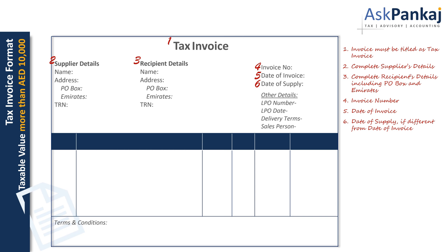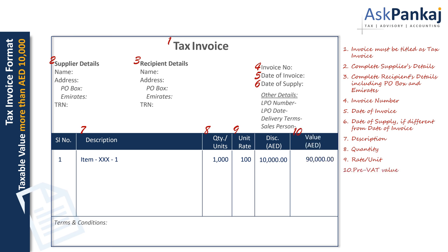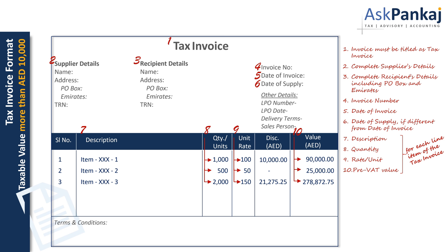The invoice should contain the description of the goods or services supplied along with the corresponding quantity, unit rate, and the resultant pre-VAT price. If the invoice contains more than one line item for goods or services, then such details should be mentioned for each line item respectively.